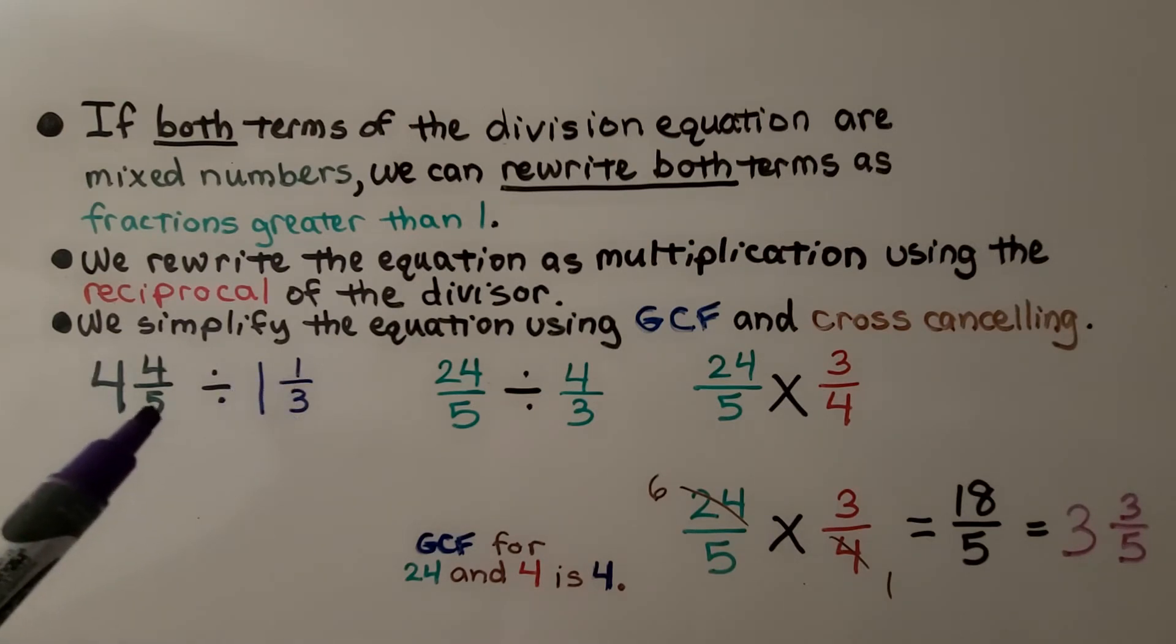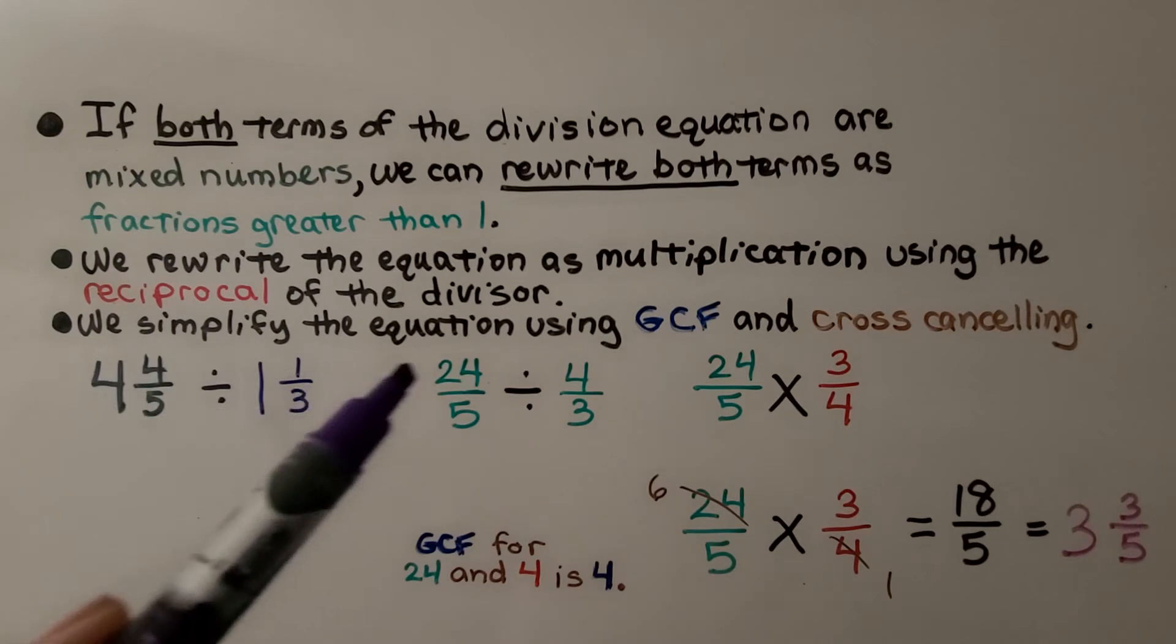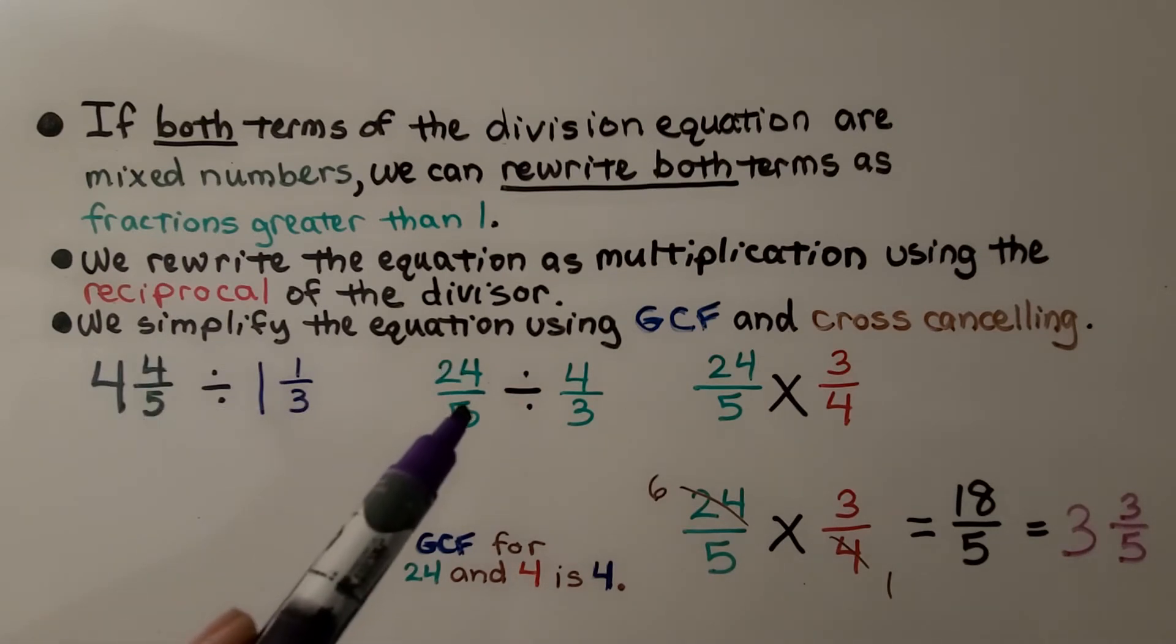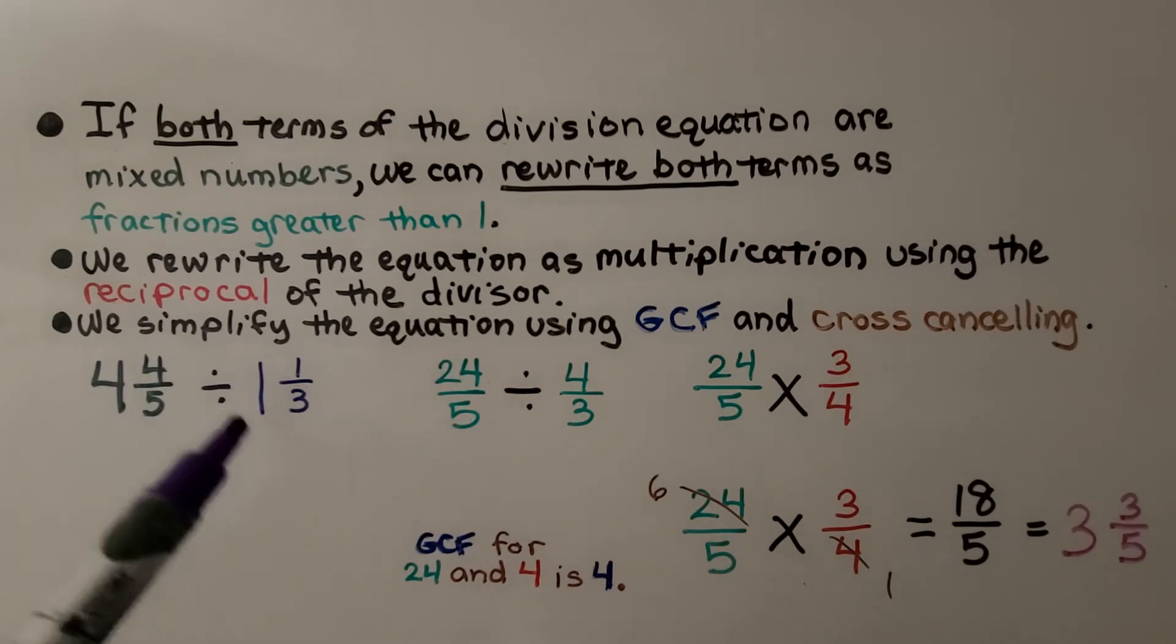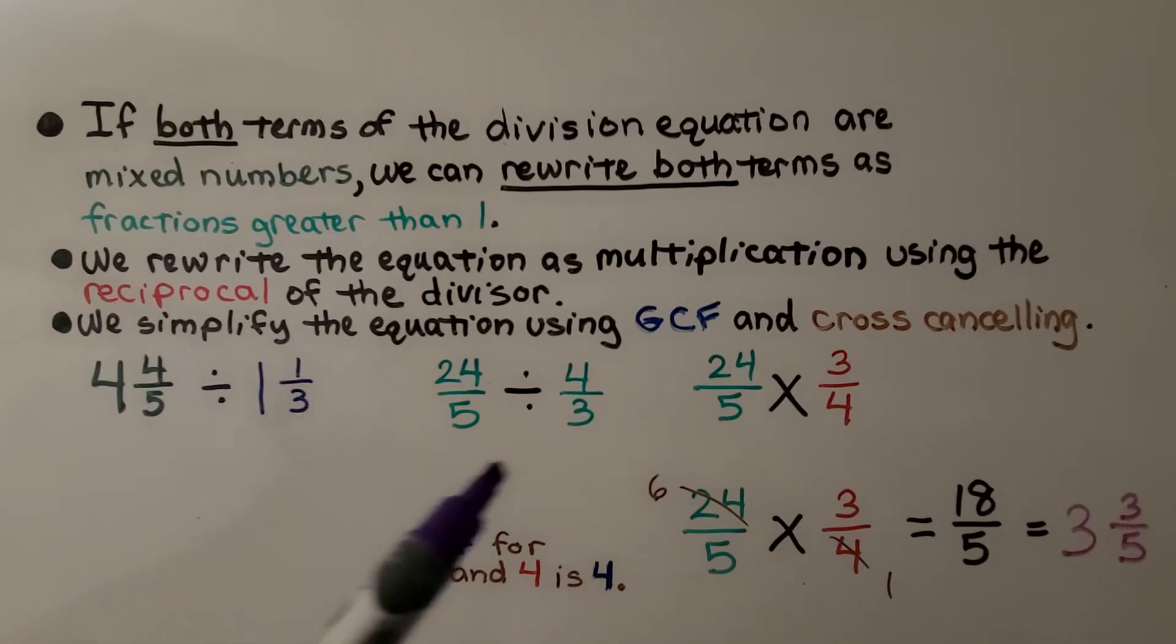We do 4×5 is 20, plus 4, that's 24. We use that denominator 5, we have 24/5. 1×3 is 3, plus 1 more is 4 over that denominator, we have 4/3.